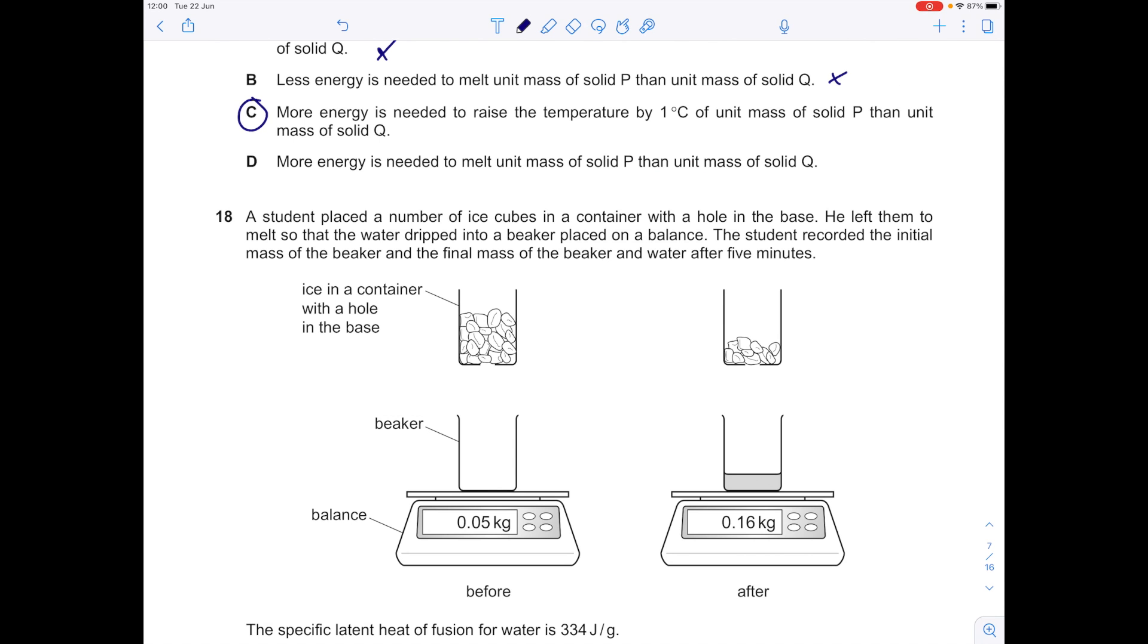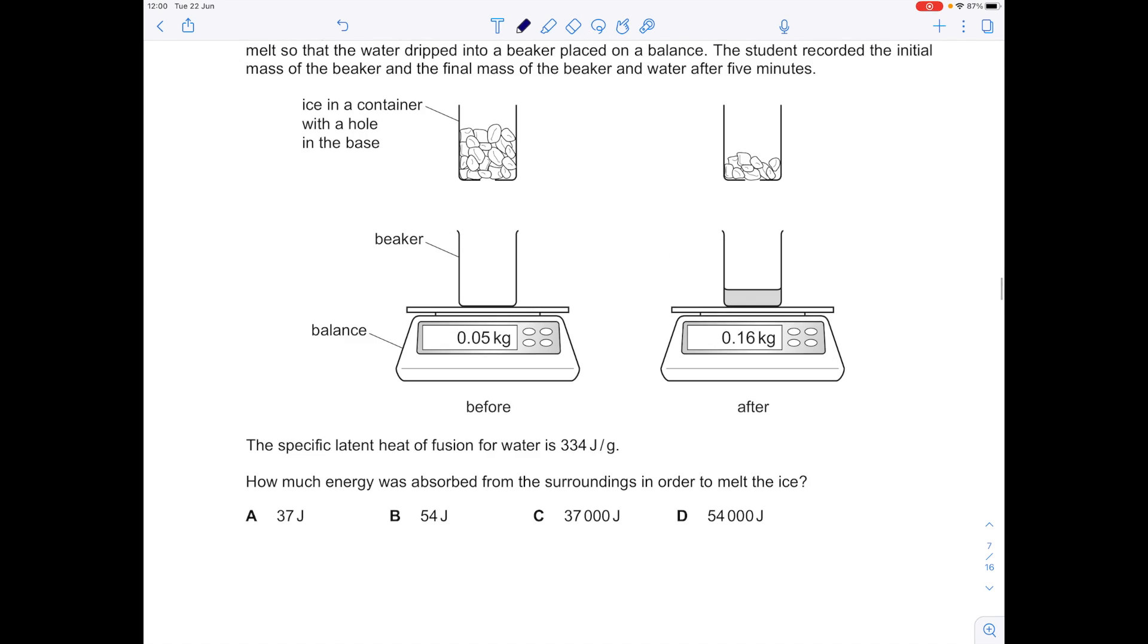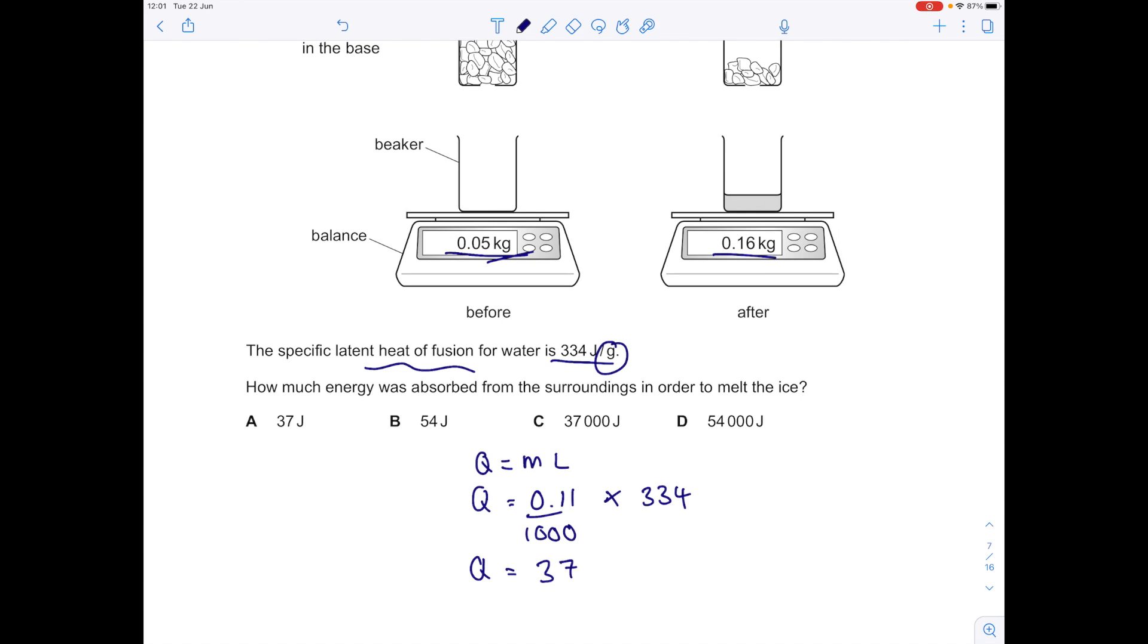A student placed a number of ice cubes in a container with a hole in the base. He left them to melt so the water dripped into a beaker placed on a balance. The student recorded the initial mass of the beaker and the final mass of the beaker in water after five minutes. The specific latent heat of fusion for water is 334. How much energy was absorbed from the surroundings in order to melt the ice? So you're using this equation here. The mass is 0.16 take away 0.05, which is 0.11. Be careful with your units. Remember this is per gram and this is in kilos, so you want to divide that by a thousand and then times it by our latent heat of fusion, which is 334, to get an answer of 37,000 joules, which is C.